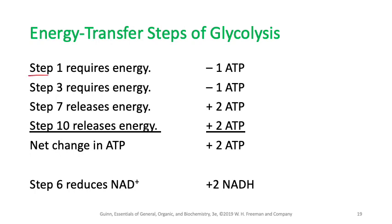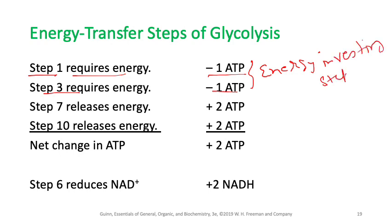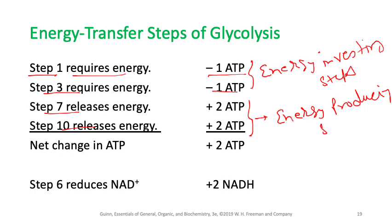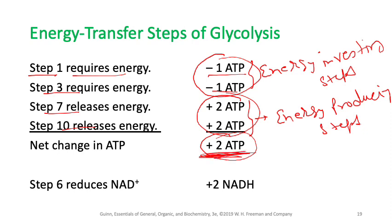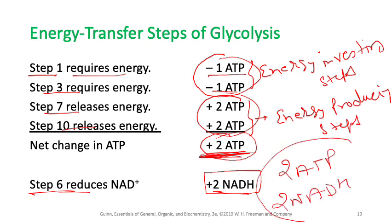Summary of glycolysis energy transfer: steps 1 and 3 are energy-investing steps (consume 2 ATP). Steps 7 and 10 are energy-producing steps (produce 4 ATP). Net gain: 2 ATP. Step 6 produces 2 NADH. These are the byproducts: 2 ATP and 2 NADH from glycolysis.